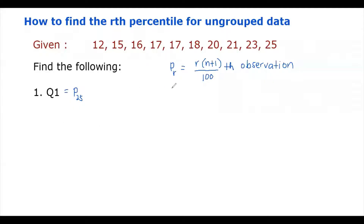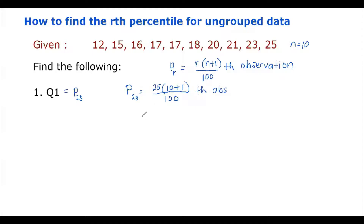The 25th percentile is calculated as 25 times n — which is 10 because we have 10 observations — plus 1, over 100. This gives us the 2.75th observation. The 2.75th observation is the second observation plus 0.75 of the difference between the third and the second observation.